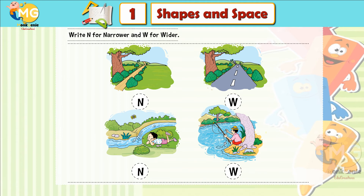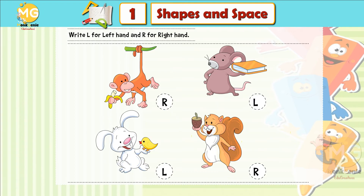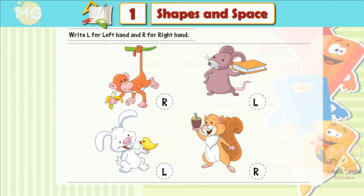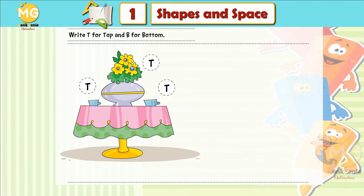Write N for narrower and W for wider. Write L for left hand and R for right hand. Write T for top.